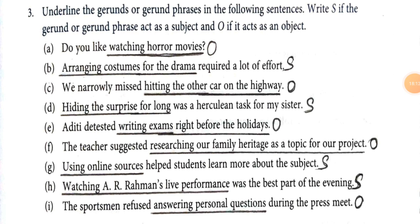Number F: The teacher suggested researching our family heritage as a topic for our project — here, researching our family heritage as a topic for our project plays the role of object and it is the object of the verb suggested.